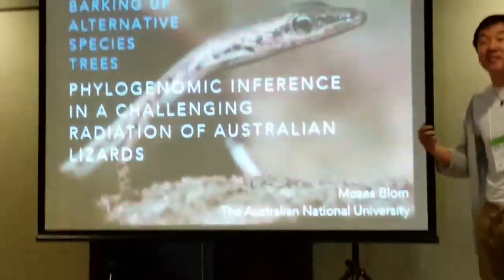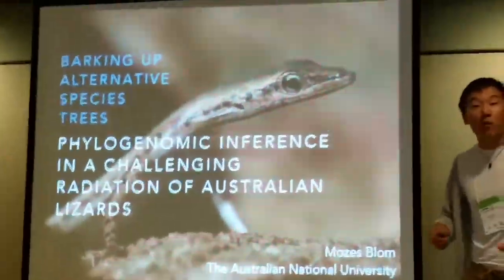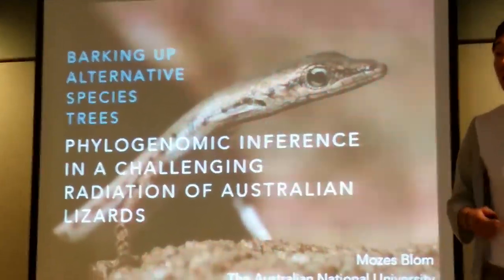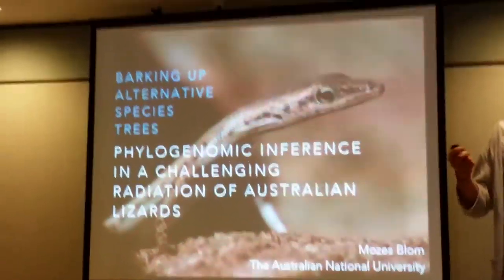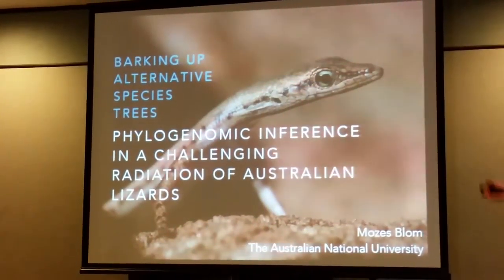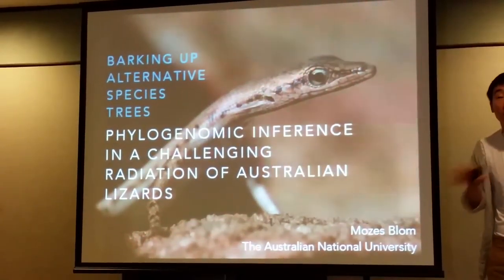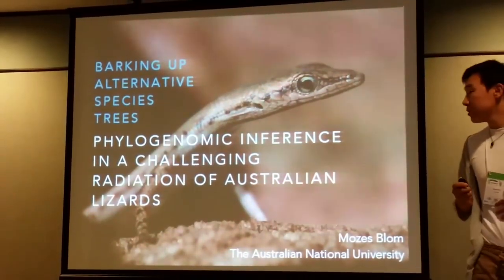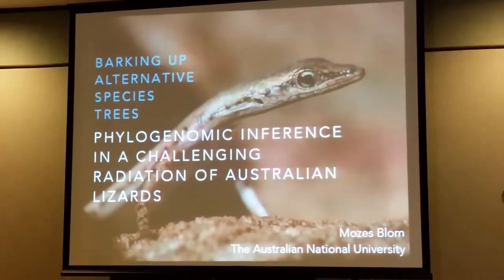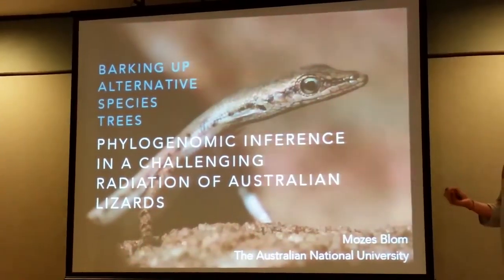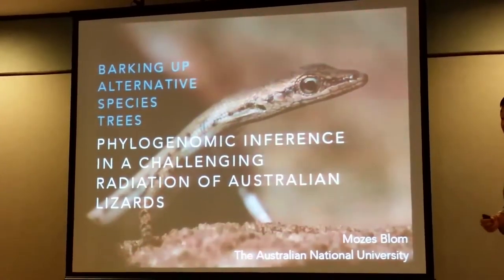Using next-generation sequencing methods, we are able to generate hundreds of thousands of orthologous loci for phylogenetic inference. When we're doing gene tree inference, not all of those loci will actually concur with one another, and there might be a lot of incongruence between those gene trees. There are a number of biological reasons, such as incomplete lineage sorting, that are actually underlying such incongruences.